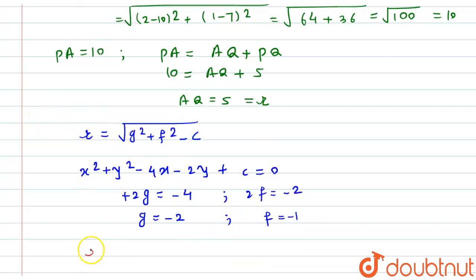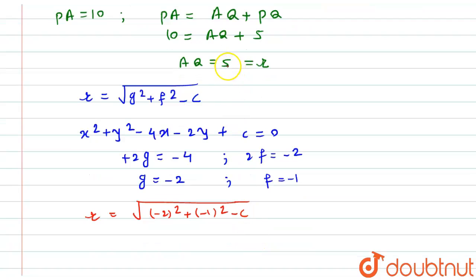R will be equal to root of G squared, minus 2 squared, plus minus 1 squared minus C. If you do squaring on both sides while putting the value of R here as 5, it will become 25. This equals minus 2 squared will be 4 plus 1 squared will be 1 minus C.